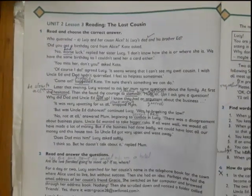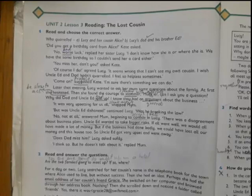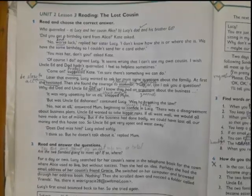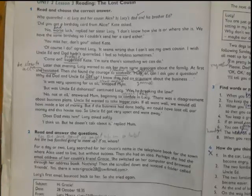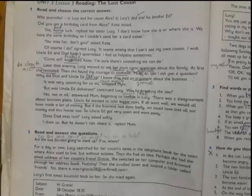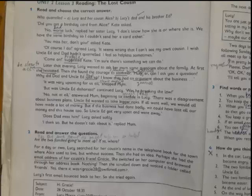It is Unit 2, Lesson 3: The Last Cousin. I'm going to give the answer at the end of the reading, but we have to read the text first. Did you get a birthday card from Alice? Cat asked. No, worse. Worse means bad, replied her sister Lucy. I don't know how she is or where she is. We have the same birthday so I couldn't send her a card either. You mean her, don't you? asked Cat.